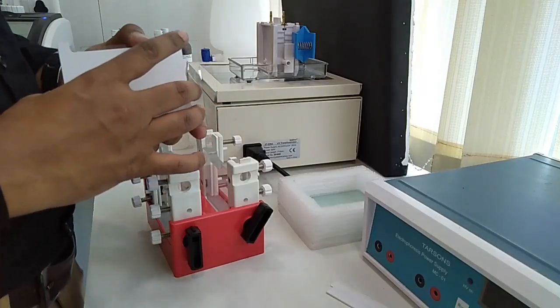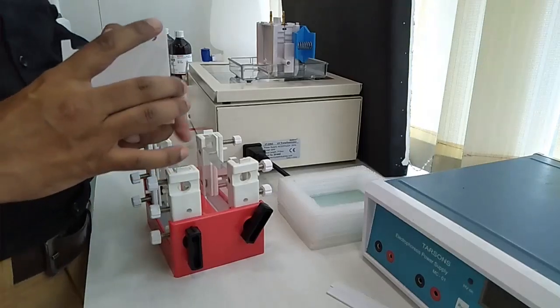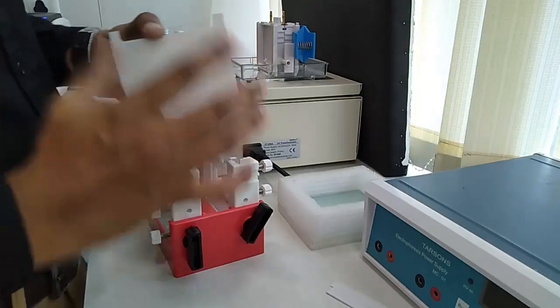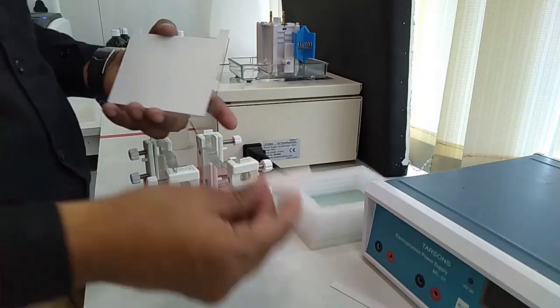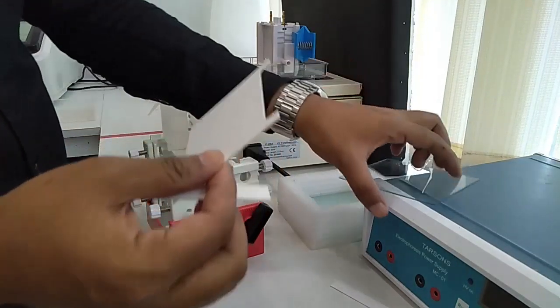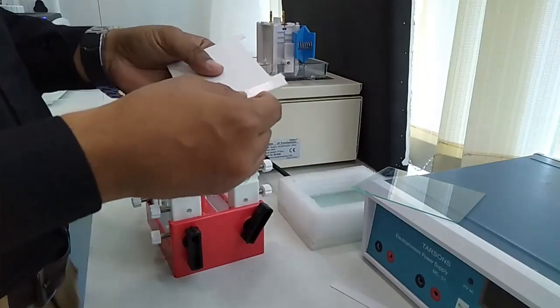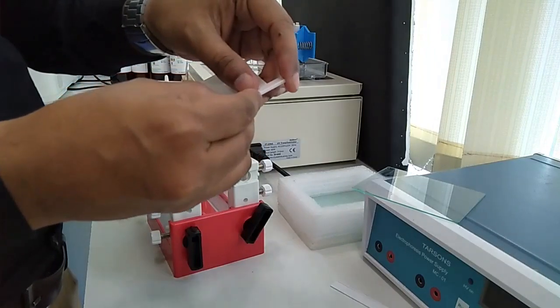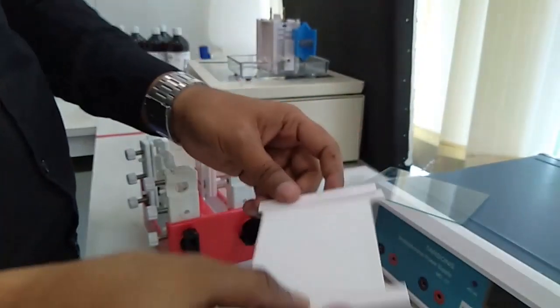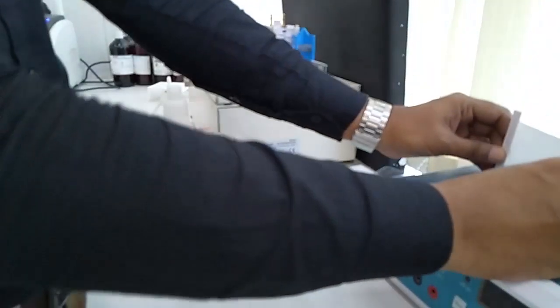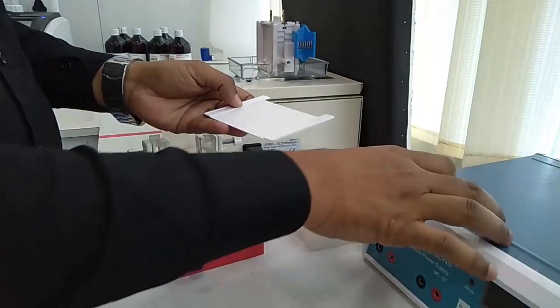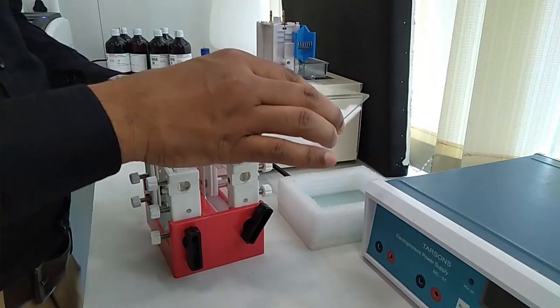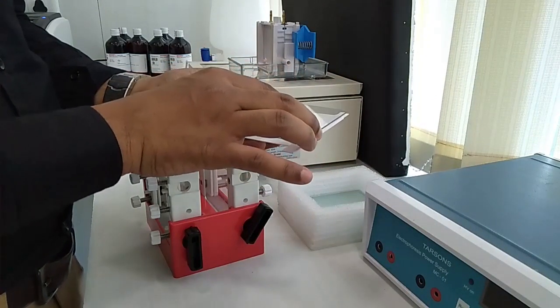Now we'll set the gel caster. So let's see how we'll set it. At first this white plate is taken and this is set up with two strips in both sides and the glass plate on the other side.